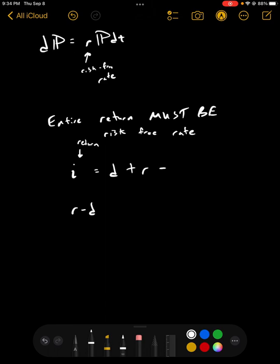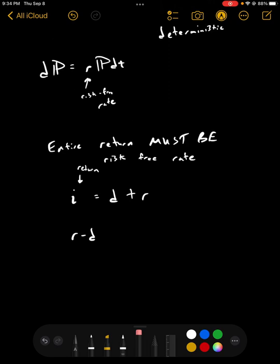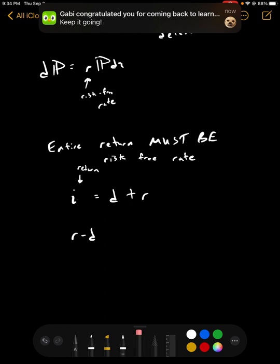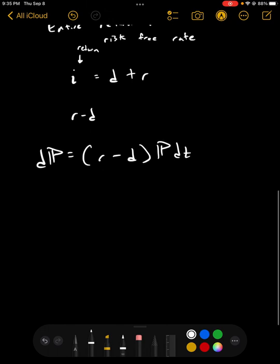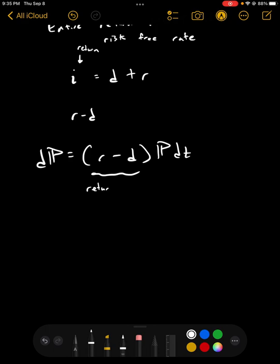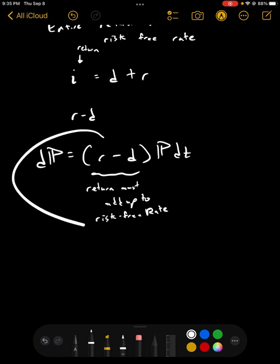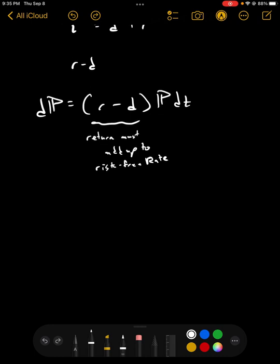So, r minus d has to be our return here. Let's rewrite that now with our new return. Instead of getting the risk-free rate, the change value of our portfolio has got to be the risk-free rate minus the dividends times P dt. And that's because return must add up to risk-free rate. And we're already secretly, not written here, getting those dividends.